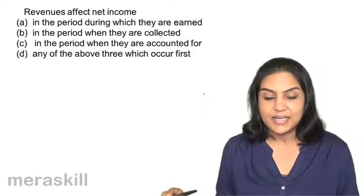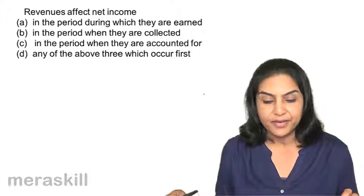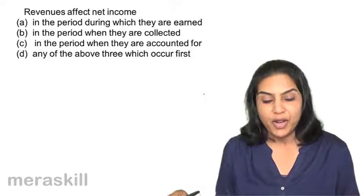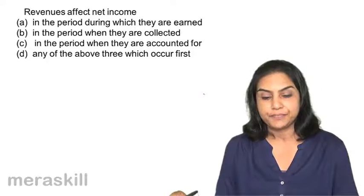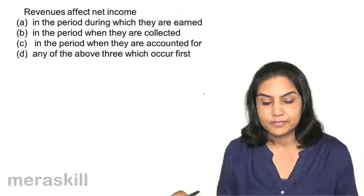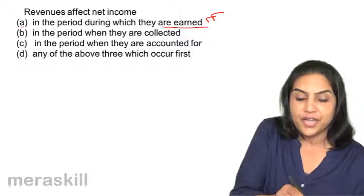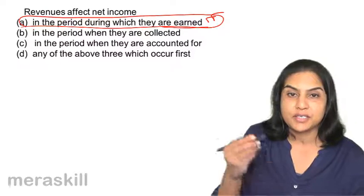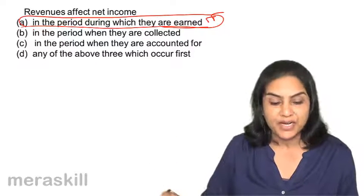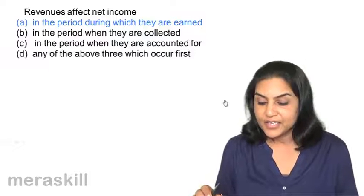Revenues affect net income: A. In the period during which they are earned. B. In the period when they are collected. C. In the period when they are accounted for. D. Any of the above three which occur first. Revenues affect income in the period during which they are earned. When they are collected is a receipt — it goes to receipts and payments or cash. Wrong accounting does not mean income is recognized. The correct answer is A.